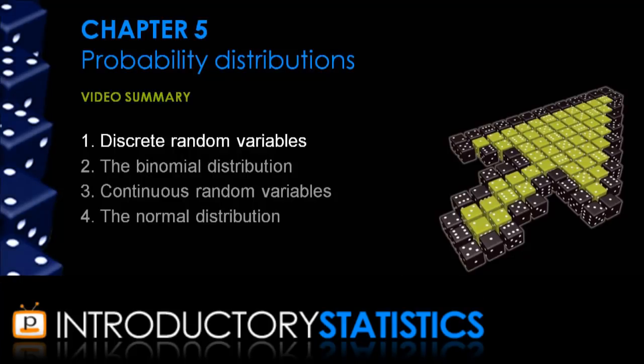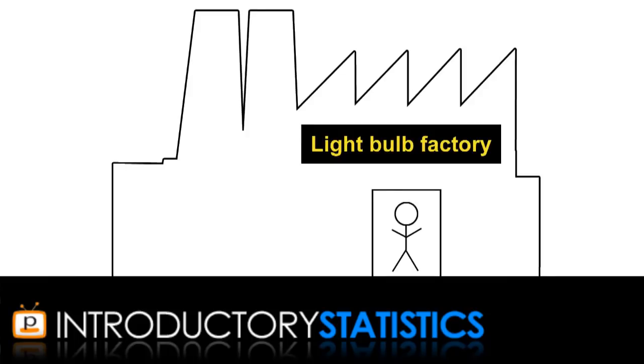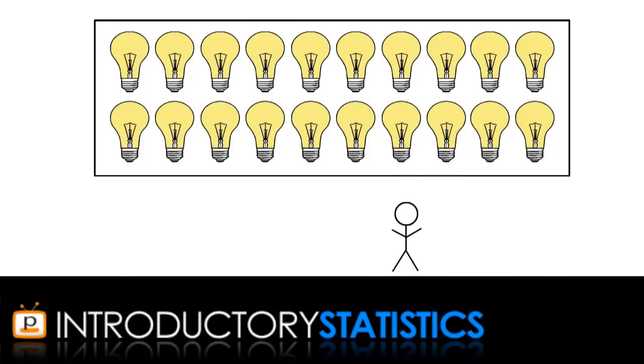That's discrete random variables. Now let's have a look at the most common discrete probability distribution, the binomial distribution. Suppose you're a quality control inspector at a light bulb factory. You're about to test 20 light bulbs to check that they work, and you'll discard any that don't. Let's say you know that overall 3% of the light bulbs that your factory makes are defective. What's the probability, for example, that exactly 2 are defective in the 20 that you're about to check?